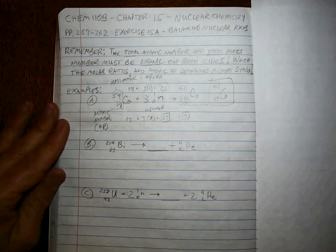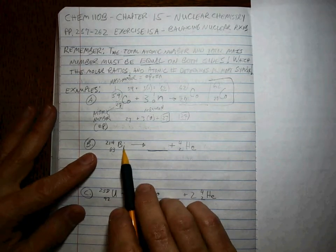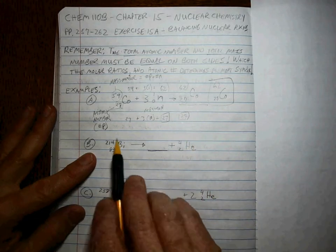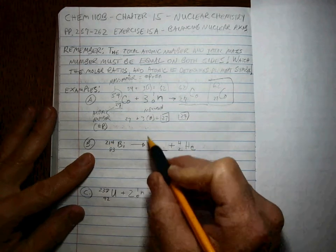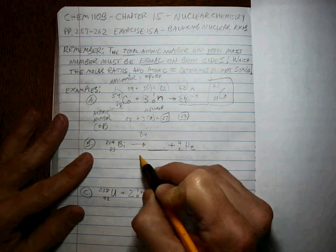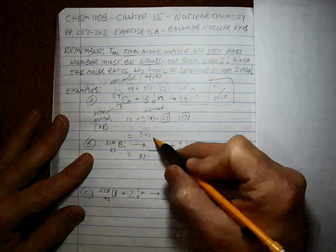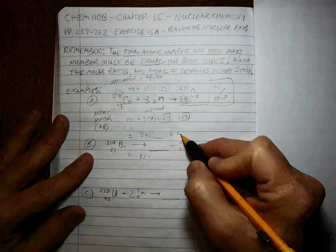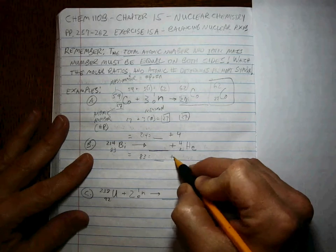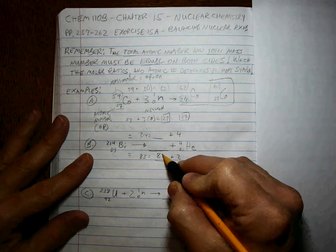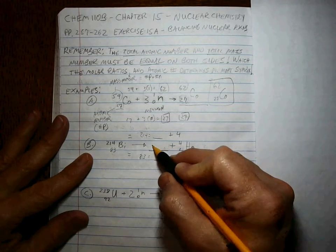What's the next one? This Bi (bismuth) splits up into this plus this. So if we have 83 and 214, this side has to total up 214, this side has to total up 83 to get them to be equal. So what plus 4 equals 214, and what plus 2 is equal to 83? Well that's 81 right? 81, 82, 83. So this is element number 81.